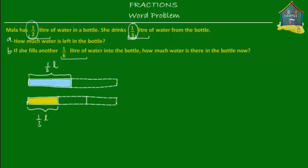How much water is left in the bottle? After Mala drinks a third of a liter from half a liter, all that's left is this purple block here — that's question A. The purple part is equal to the difference of half a liter and a third of a liter. So all we have to do is subtract a third of a liter from half a liter: one half minus one third. But we cannot subtract these two as they are because the denominators are different — two and three. We must change them to a common denominator.